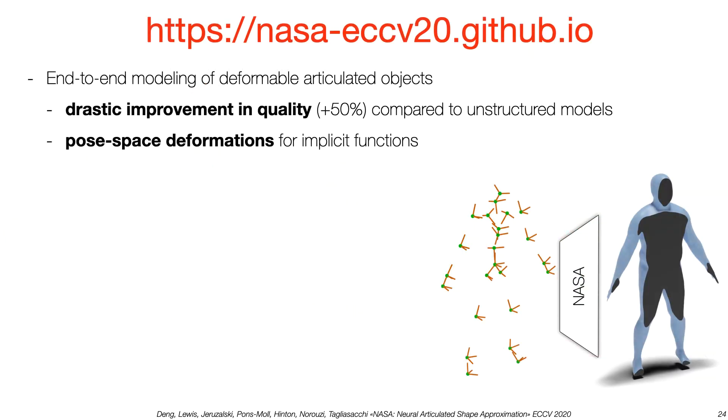To conclude, we propose a neural network to represent deformable articulated bodies. We provide a drastic improvement in representation quality compared to the state of the art, and introduce a way to model pose space deformations in neural implicit models. We also show how our model can be used in complex dense tracking tasks in just a few lines of code.